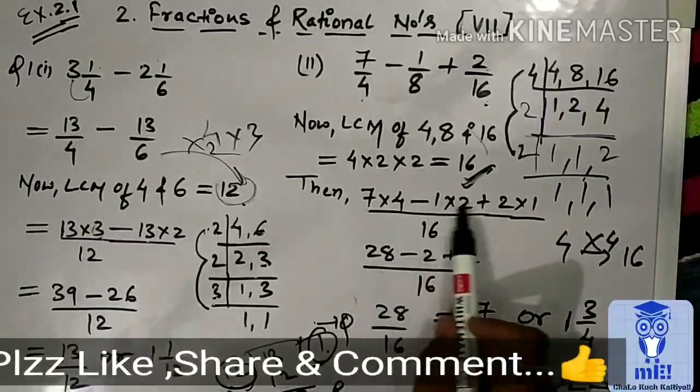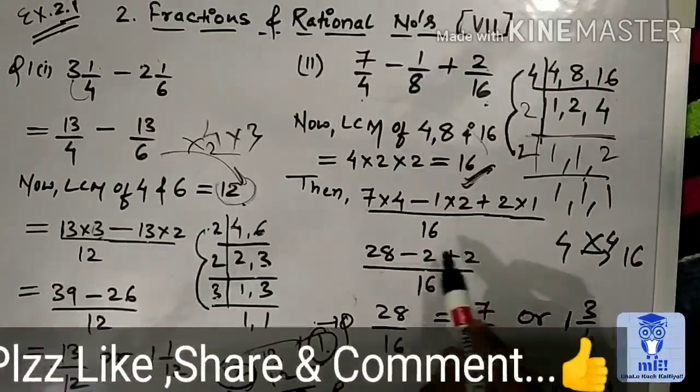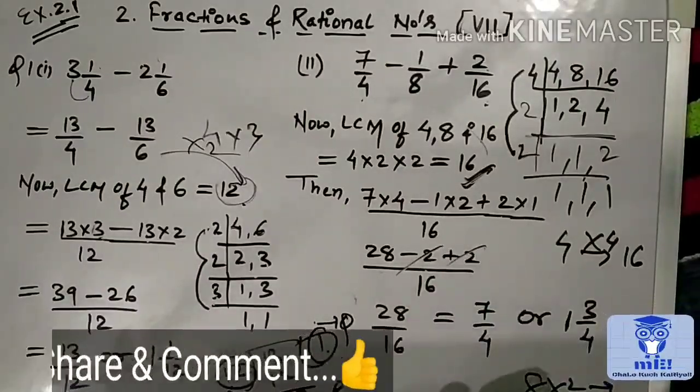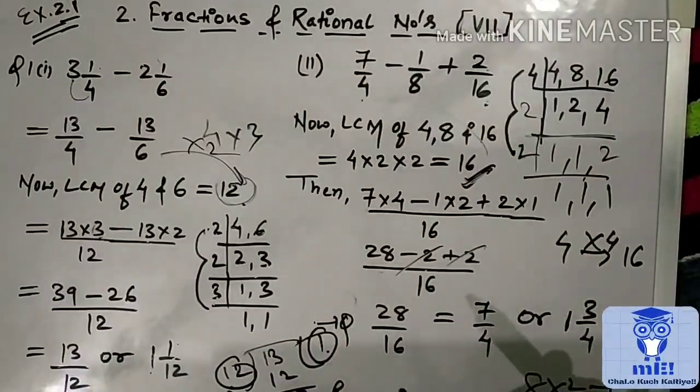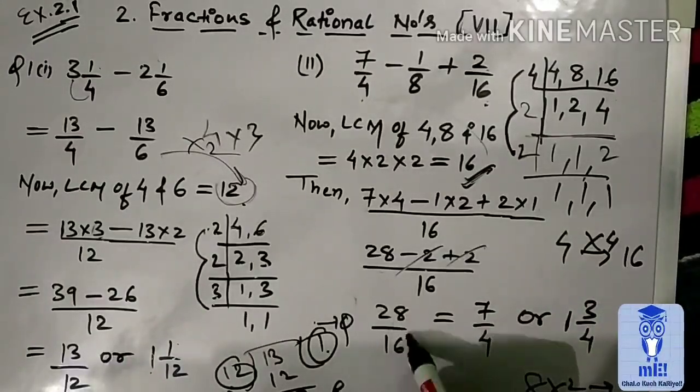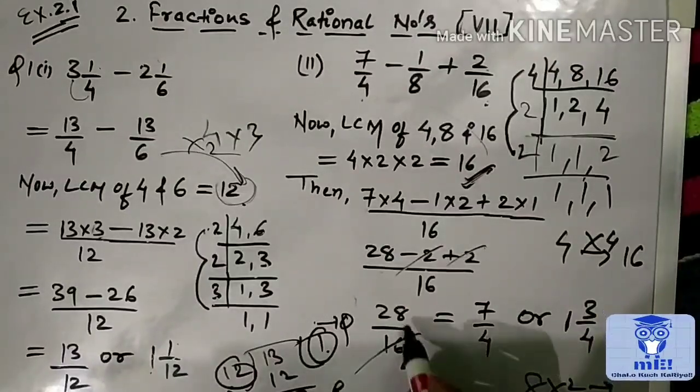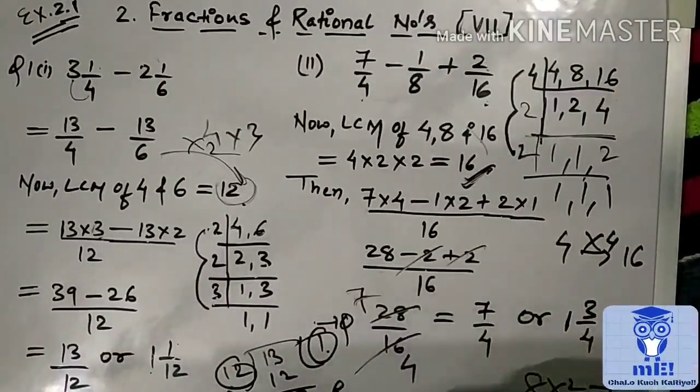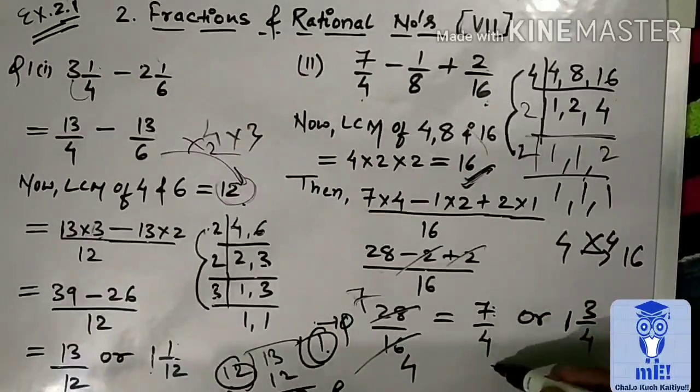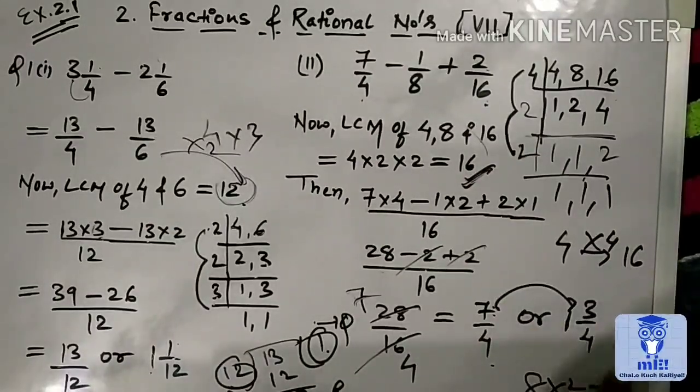So, 2 into 1, 7, 4, 28. Multiplication of these 2, minus 2, plus 2. Minus 2, plus 2. Different sign. Always subtract according to the addition rule. So, we will get 28 by 16. Again, this we will cancel. 4 for the 16. And 7 for the 28. So, 7 by 4.